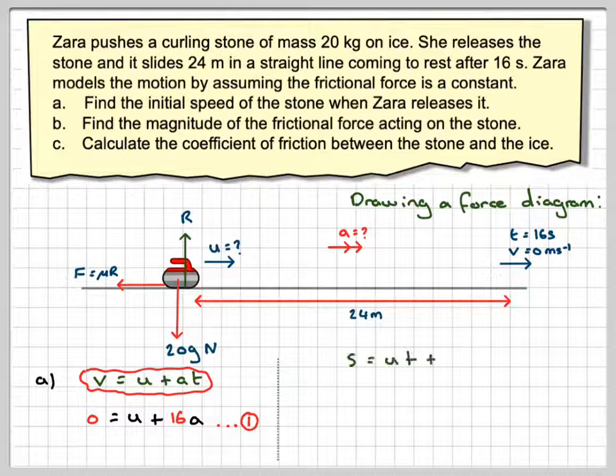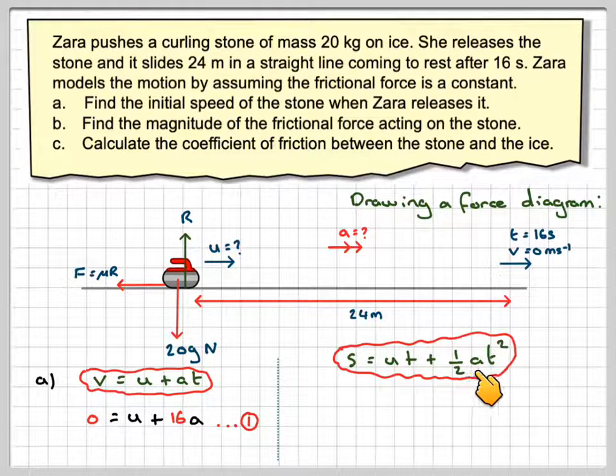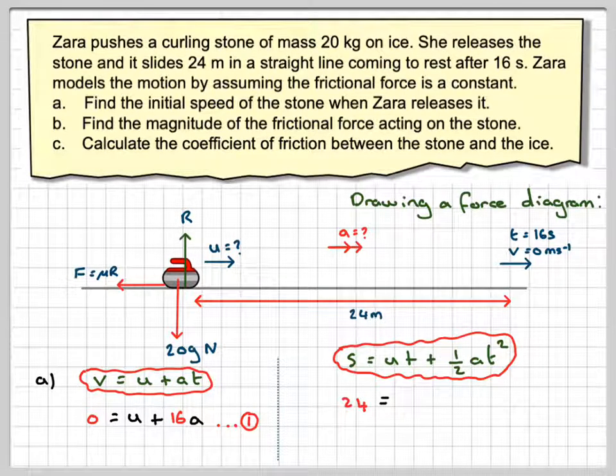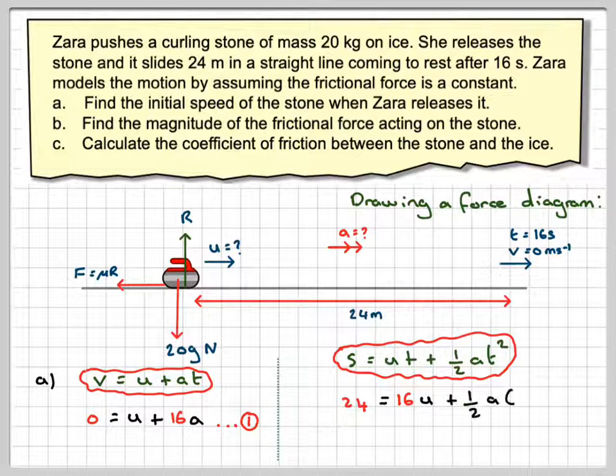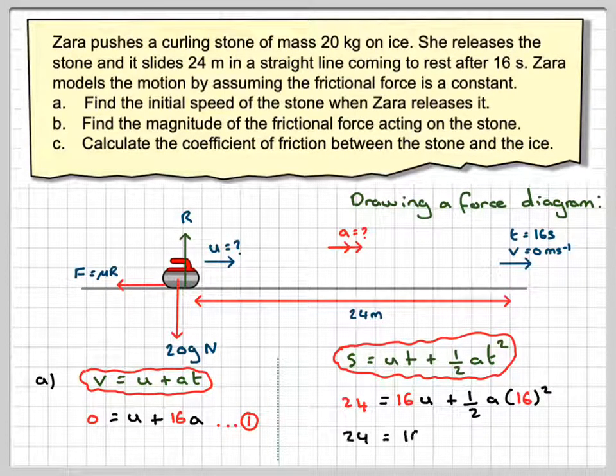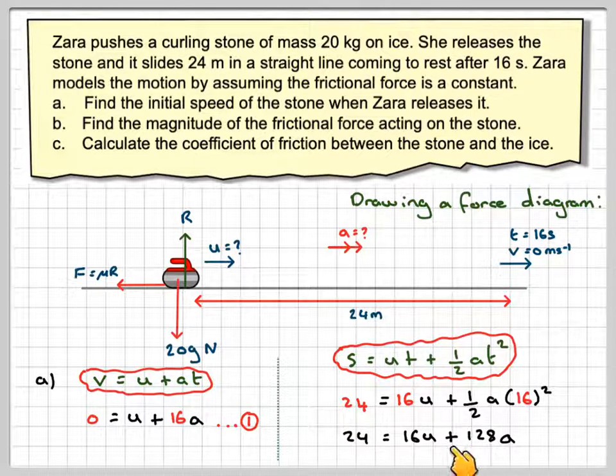And then using s is equal to ut plus a half at squared we're going to have that 24, that's distance travelled, is going to be equal to 16u plus a half times a times 16 squared. Well 16 squared is 256, divided by 2 gives 128. So we're going to have 24 is equal to 16u plus 128a.